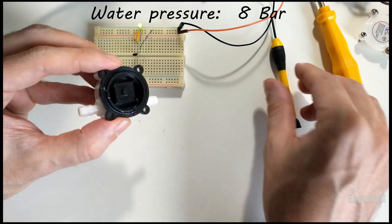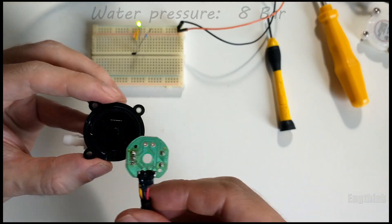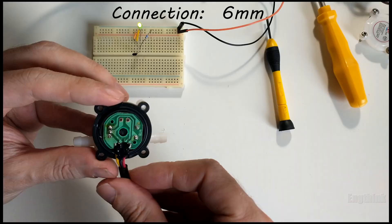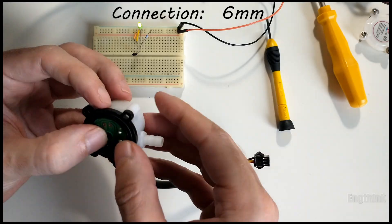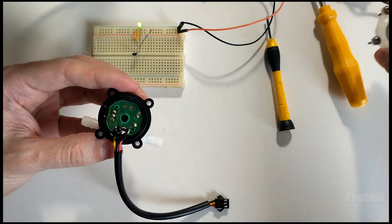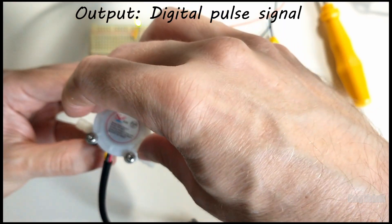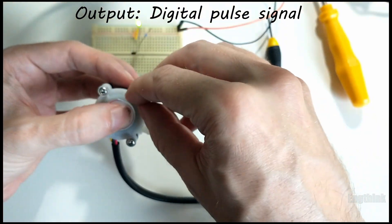Water pressure: up to 0.8 megapascals or 8 bar. Connection: 6 millimeter external diameter, suitable for 6 millimeter hoses. Output: digital pulse signal, frequency proportional to flow rate.